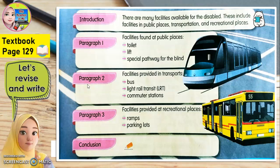Continue with paragraph 2. Information given: facilities provided in transports — bus, light rail transit, LRT, and commuter stations. Kemudahan yang disediakan di dalam pengangkutan seperti bus, LRT, and in the commuter stations.